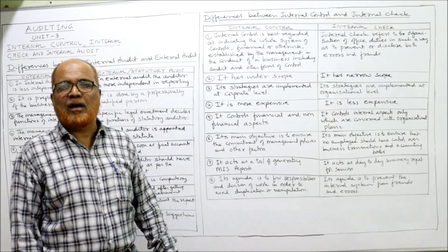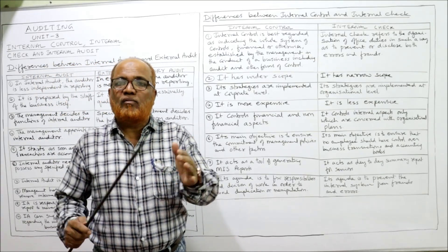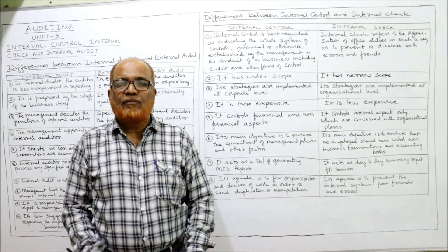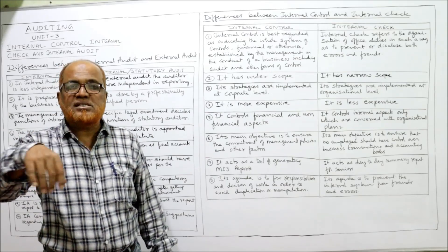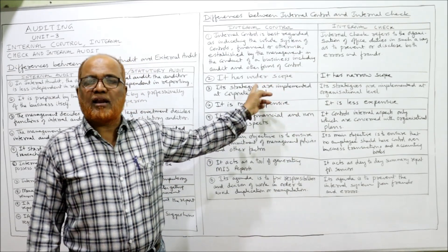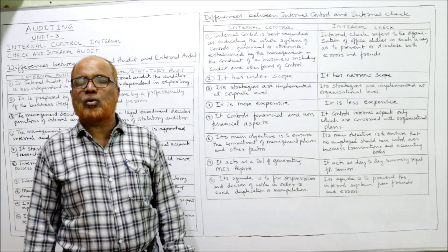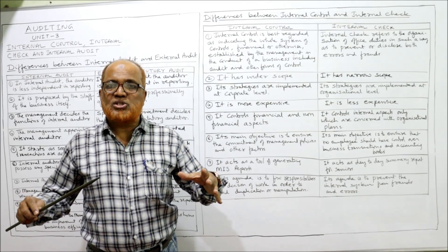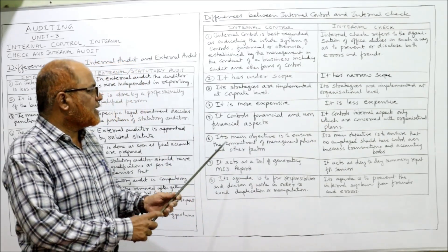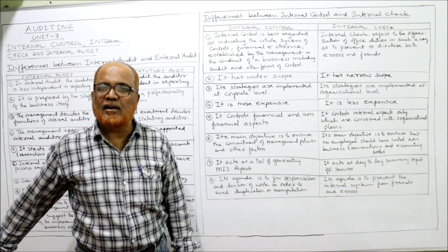Regarding implementation levels: internal control strategies are decided and implemented at the corporate level by top management. Internal check strategies are implemented at organizational lower levels. Regarding cost: internal control is more expensive — more funds need to be invested — because the system is very wide. Internal check is less expensive. Regarding coverage: internal control covers all financial and non-financial aspects, whereas internal check controls only internal aspects concerned with organizational plans.